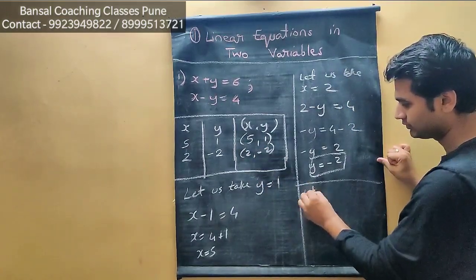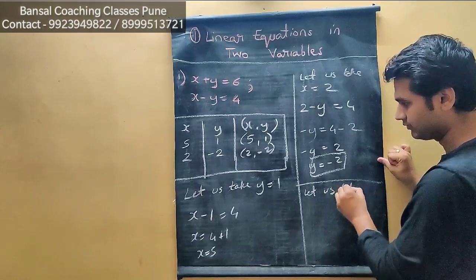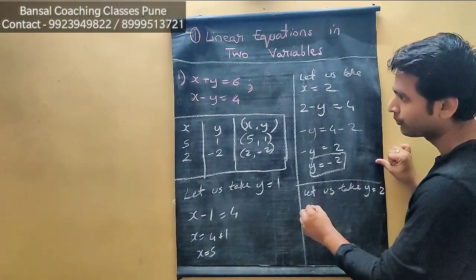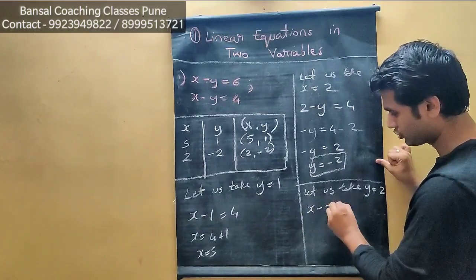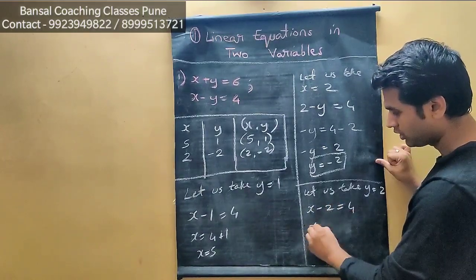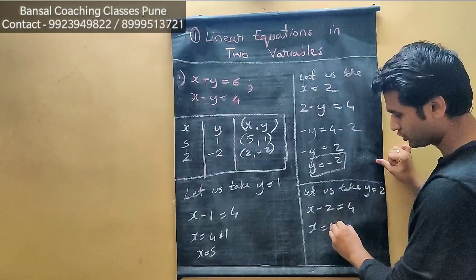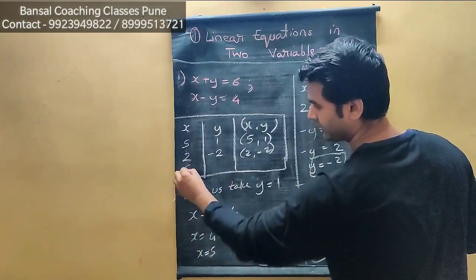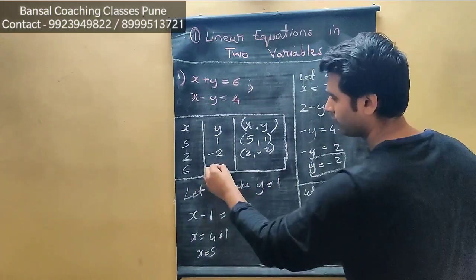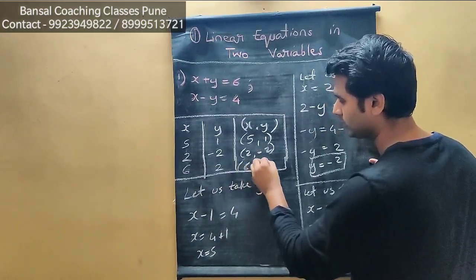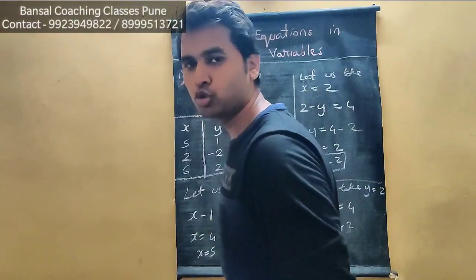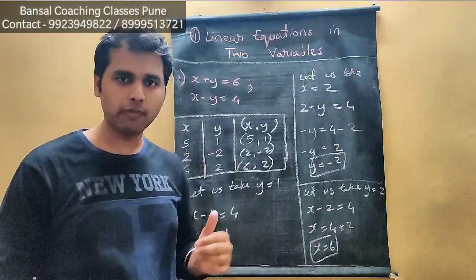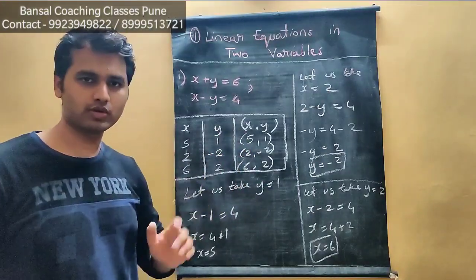For the third value, let us take y is equal to 2. So x minus 2 equals 4, therefore x equals 4 plus 2, x equals 6. So when y is 2, x is 6 — point (6, 2). We have now found 3 values each from both equations. Now we'll prepare a graph based on those values.